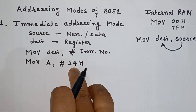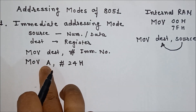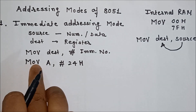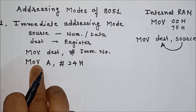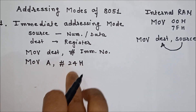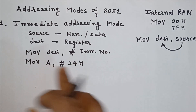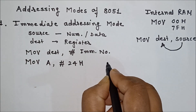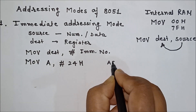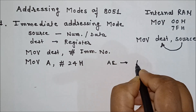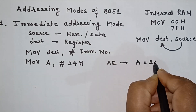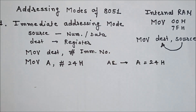For example, I can write the instruction MOV A, #24H. Here 24H is what I want to store in the accumulator, so the destination is accumulator A. After execution of this instruction, you will get the value 24H in the accumulator.